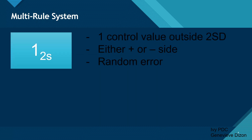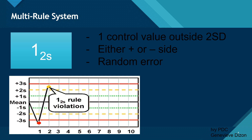The 1-2-S rule means there is one control value which is outside the two standard deviations. This out-of-control value can either be on the positive side or on the negative side. A 1-2-S violation is a random error. So on our chart, the black line in the middle is the mean and we have our standard deviations plotted. A value located outside the two standard deviations — either on the positive or negative side — is considered a violation of the 1-2-S rule.